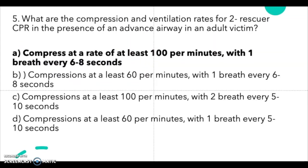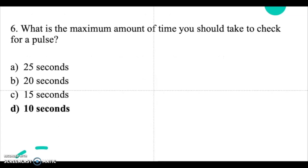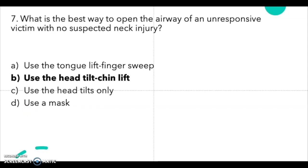Question 6: what is the maximum amount of time you should take to check for a pulse? We all know it's 10 seconds. You check for a pulse for 10 seconds, and if there is no pulse you start CPR right away. The correct answer is D.